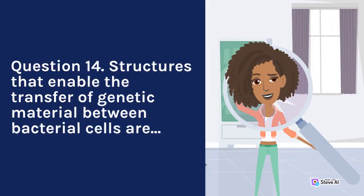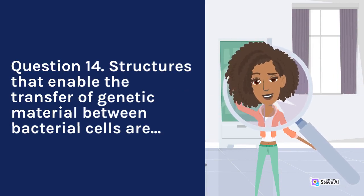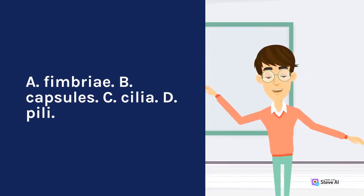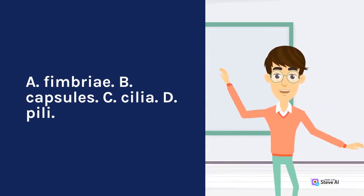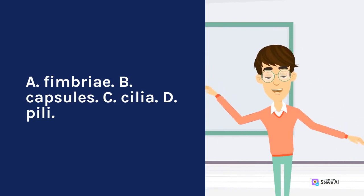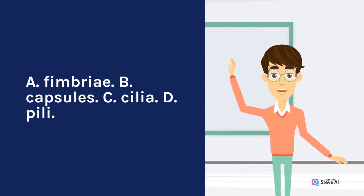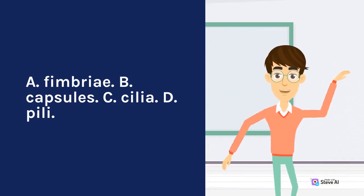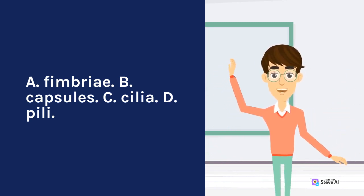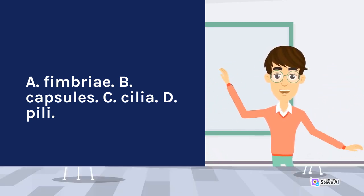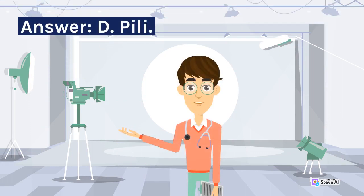Question 14. Structures that enable the transfer of genetic material between bacterial cells are: A. Fimbriae. B. Capsules. C. Cilia. D. Pili. Answer: D. Pili.